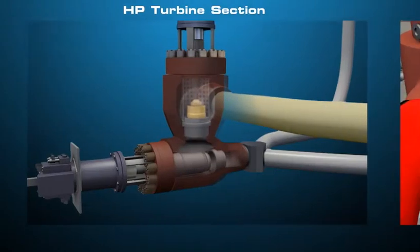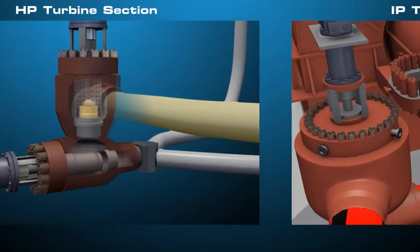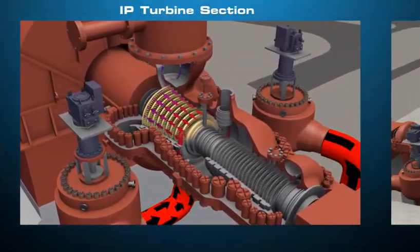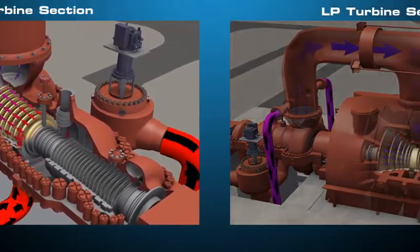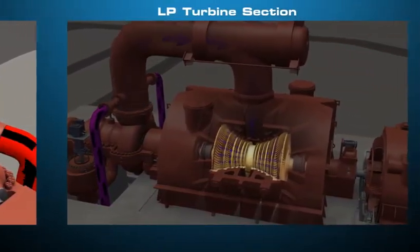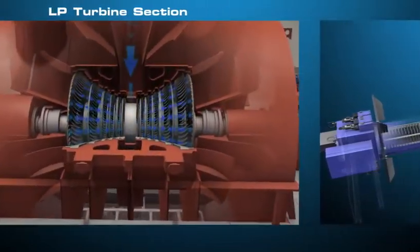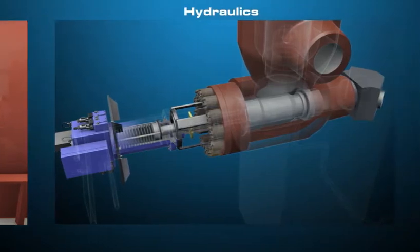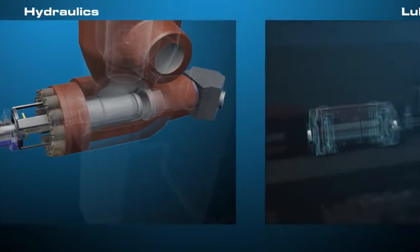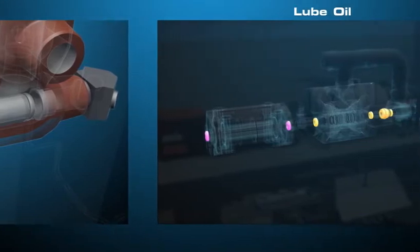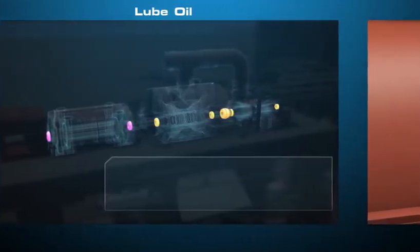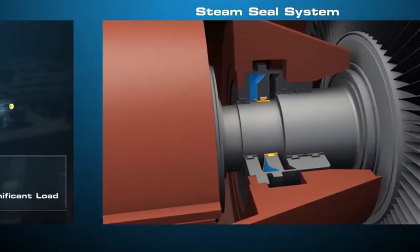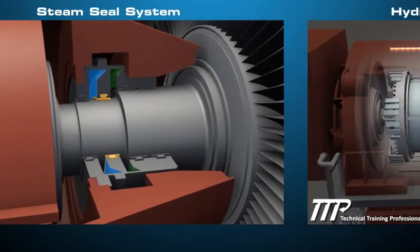The main systems include the HP section, IP section, LP section, hydraulics, lube oil, and steam seal system. The steam turbine produces torque that will drive an electric generator.